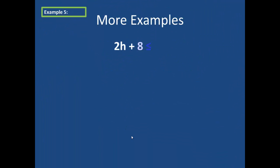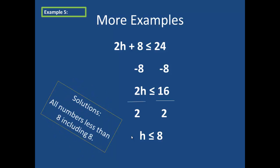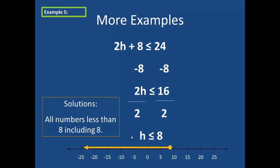In example 5, I have a two-step equation: 2h plus 8 is less than or equal to 24. In order to solve this, I must first get the 2h term by itself. So I subtract 8 from both sides, giving me 2h is less than or equal to 16. I then divide both sides by 2 to get h is less than or equal to 8. That means my solution set is all numbers less than 8, including the number 8. So on the number line, I'm going to use a closed point at the value 8 and draw an arrow pointing to the left.